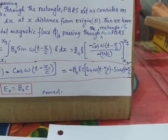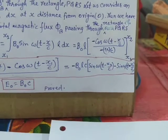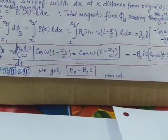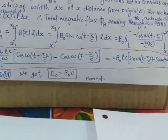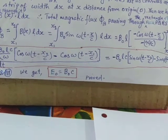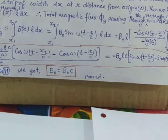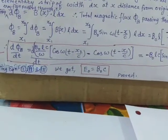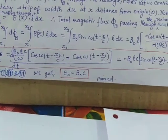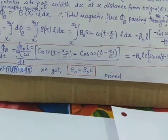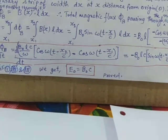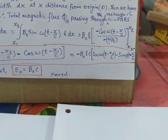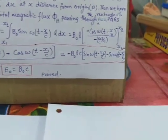Evaluating within the limits x1 to x2 we get cos(ωt minus x2 by c) minus cos(ωt minus x1 by c), divided by minus omega by c. So with B₀L already in the numerator and dividing by minus omega by c, we get B₀Lc by omega. The minus signs in numerator and denominator cancel each other.